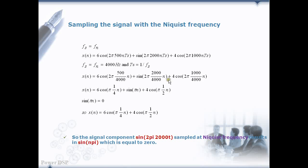Next we sample this analog signal with the Nyquist rate. First the analog signal is converted into discrete form here and we know Ts is equal to 1 by Fs and the same is substituted here in the equation and then simplified.